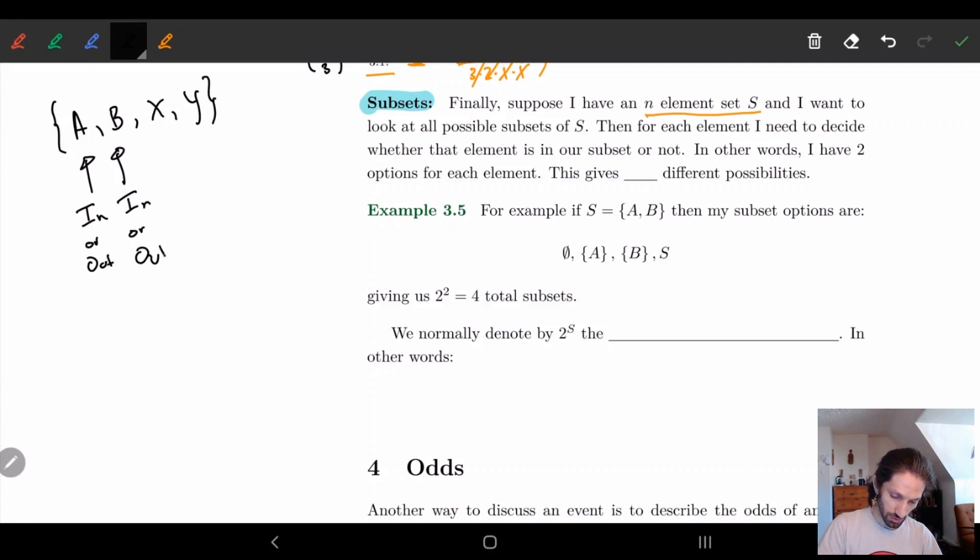Same thing for this, I can choose to keep it in or out. And for Y, I can choose to keep it in or out. So for each of these options, I have two choices. And so the multiplication rule basically says I should multiply these all together. There's four of these, so I get 2 to the 4. And so if you think about this generally, if I have n elements in my set and each one of them has two options, I'm just going to have 2 to the n different options altogether.